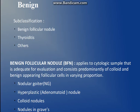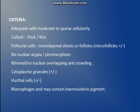The second category is benign, with subclassifications including benign follicular nodule and thyroiditis. A benign follicular nodule is any sample where we see colloid and benign-appearing follicular cells. These can be seen in a variety of conditions like nodular goiter, adenomatoid nodule, colloid nodule, and nodule in Graves disease. The criteria include: adequate cellularity, thick or thin colloid, monolayered sheets of follicular cells, no crowding, no nuclear atypia; cytoplasmic granules, Hurthle cells, and macrophages can be present.